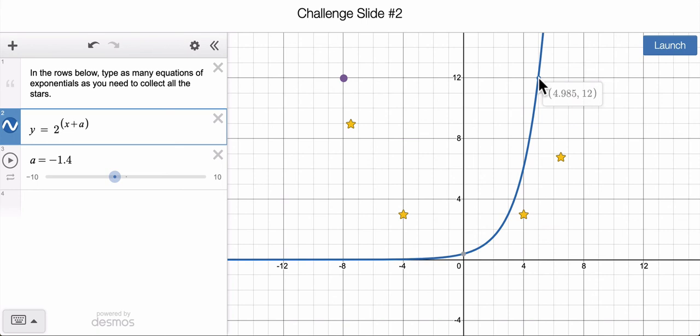4.98512. Where would its reflection be on the other side? Well, it would still be at a height of 12, but what would be the opposite? The x value would be the opposite, right? Instead of positive 4 point, what was that? 85, 985? What would we have? We have negative 4.985 somewhere over here, right?